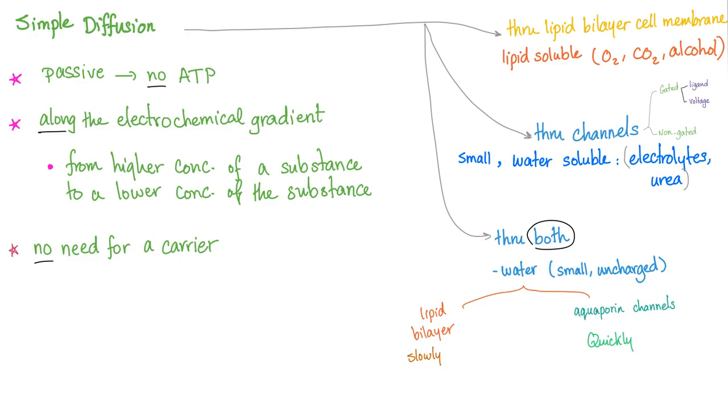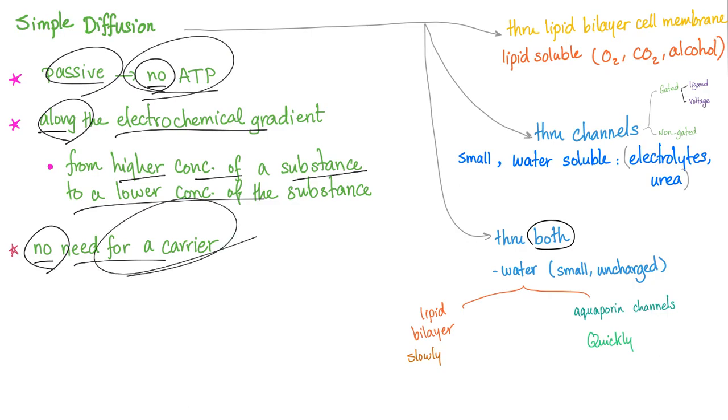Let's talk about simple diffusion. It's passive, which means no ATP, along the electrochemical gradient from higher concentration to lower concentration. There's no need for carrier. Through the lipid bilayer cell membrane if you are lipid soluble, such as oxygen, carbon dioxide, and alcohol. Through the protein channels if you are water soluble, such as electrolytes and urea.